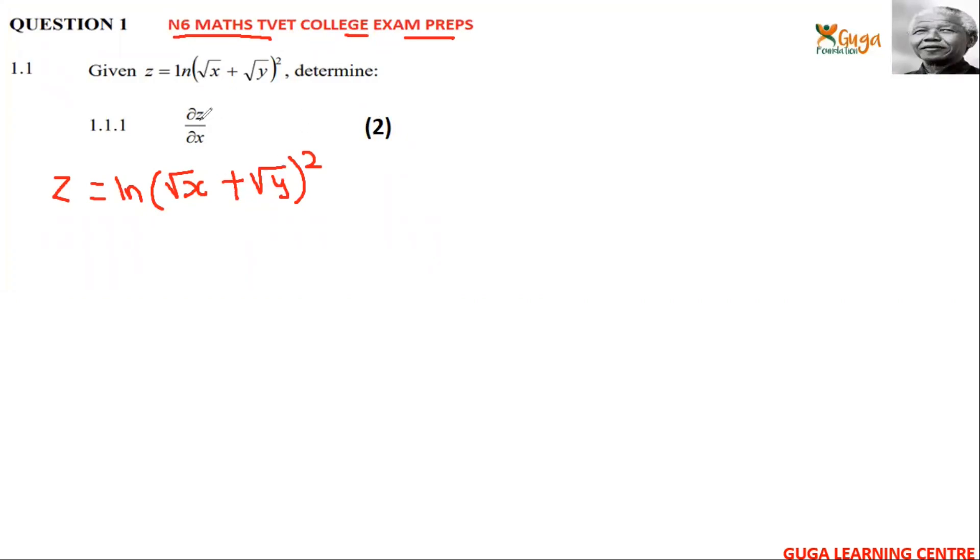Determine dz/dx. So we have to determine dz/dx. My dz/dx, which is d/dx of z, is d/dx of ln(√x + √y)³.